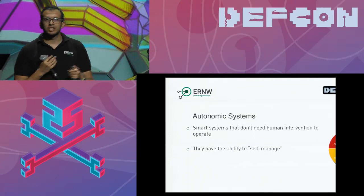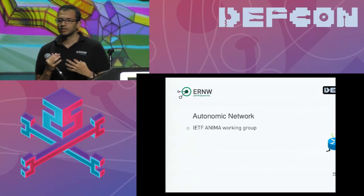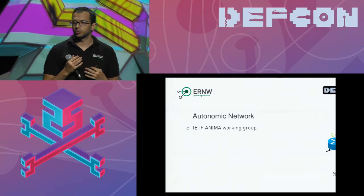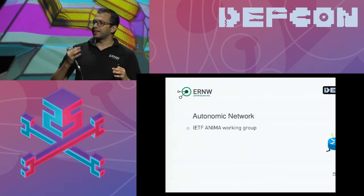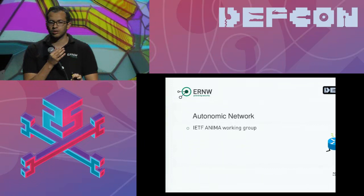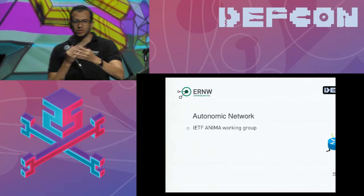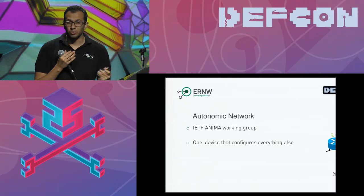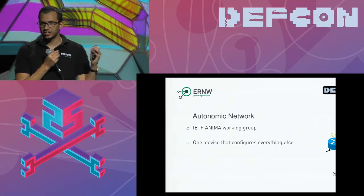In 2013, Cisco and people from IETF decided to make this into reality and implement what we call Autonomic Network. The idea: just one router, and anything that connects to this router after that will be configured automatically. You might ask: how many commands do I need to write? Just five commands on one single device, and after that everything connected will be up and running.